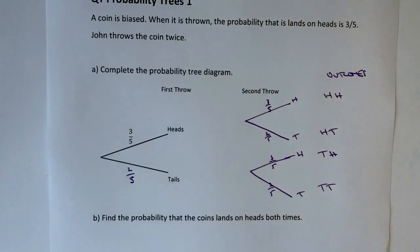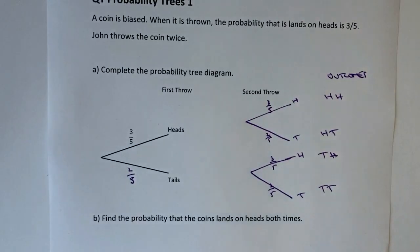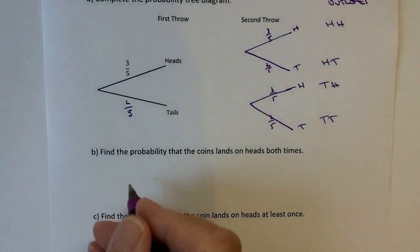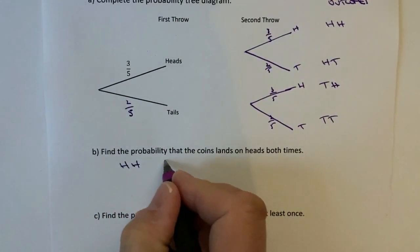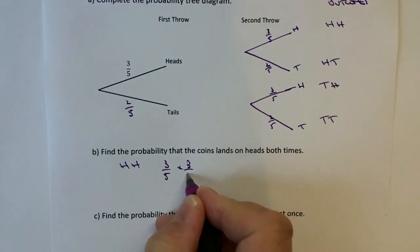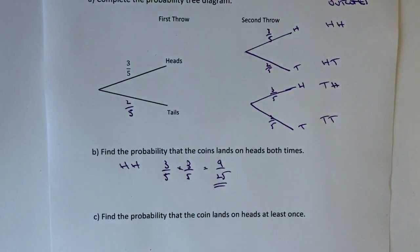Okay, and the question is find the probability that the coin lands on heads both times. So in other words, what we're interested in is this probability of heads, heads. Okay, well the probability of landing on heads first time is three-fifths, second time is three-fifths and what we do is we multiply across the branches. So it's going to be heads heads is going to be three over five multiplied by three over five and that's going to be nine out of 25 which is the answer to the question.